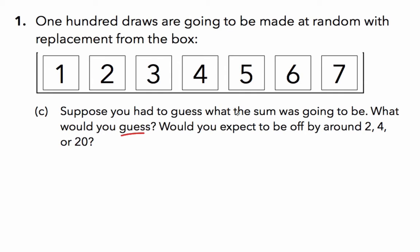Part C asks for the same information another way. If we were to guess what the sum would be on any one set of 100 draws, we would want to guess 400. And again, we would expect our guess to be just slightly off by about 20, our standard error.